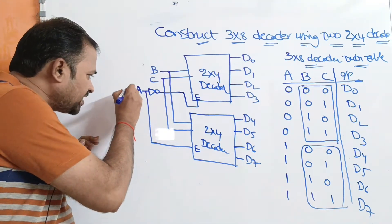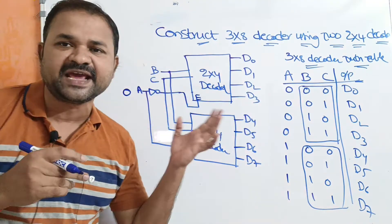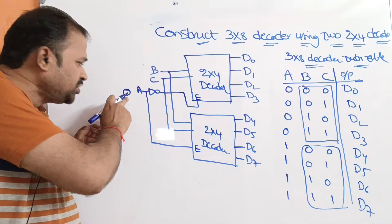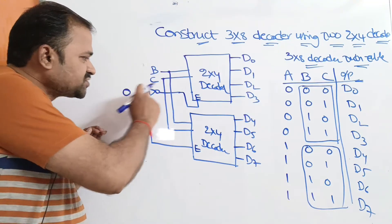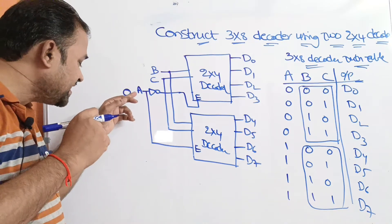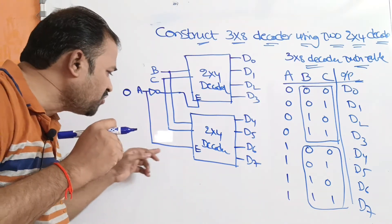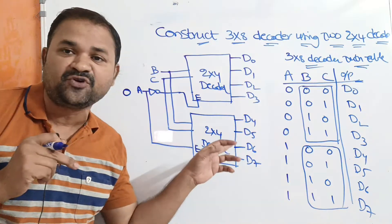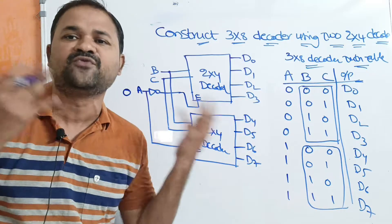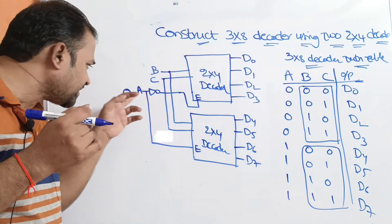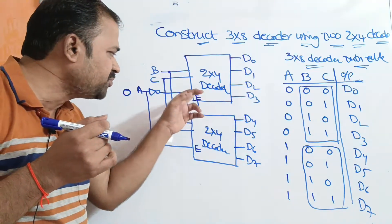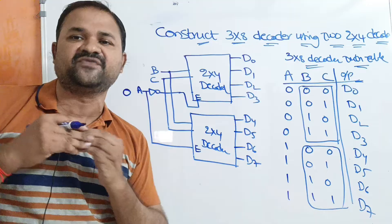Let A be 0. That means the enable input is 0. The complement of 0 is 1, so 1 will be passed as enable input to the first 2x4 decoder. Whereas A value is 0, so 0 will be passed as enable input to the second 2x4 decoder. If the enable input is 0 then the second 2x4 decoder won't work. Since the complement of A is 1, the enable input to the first 2x4 decoder is 1, so the first 2x4 decoder will work.